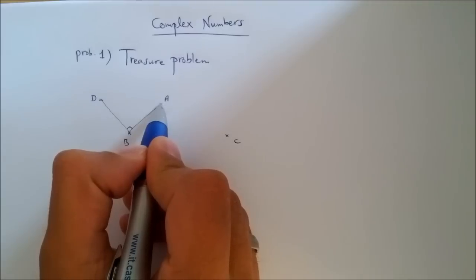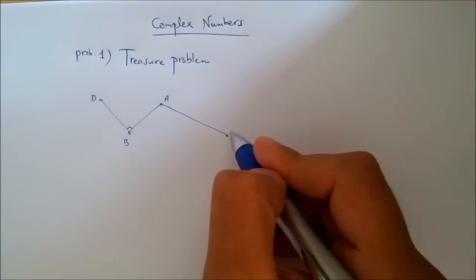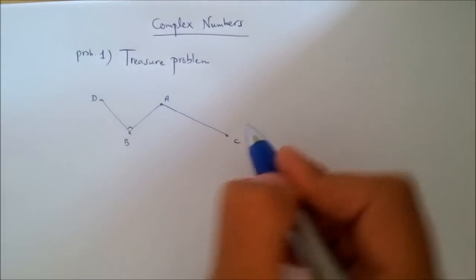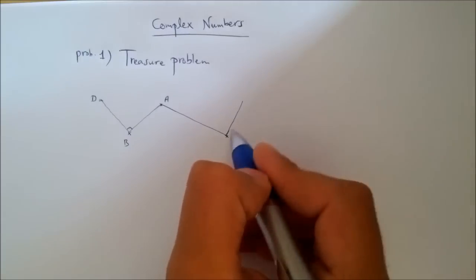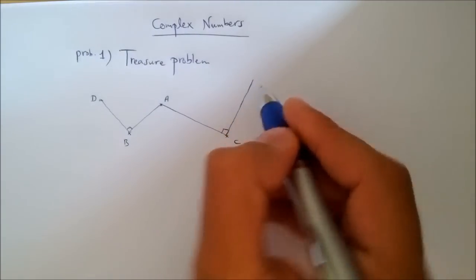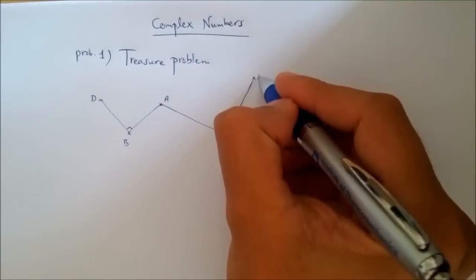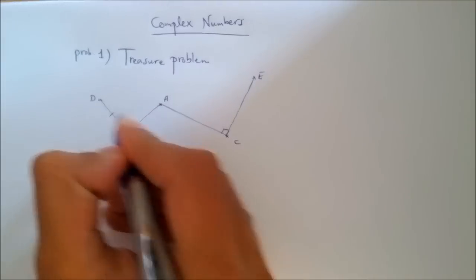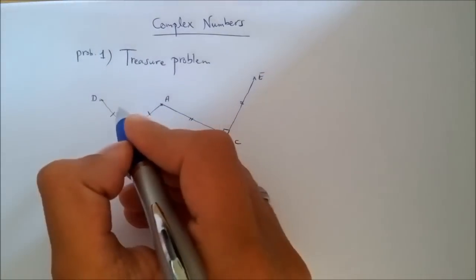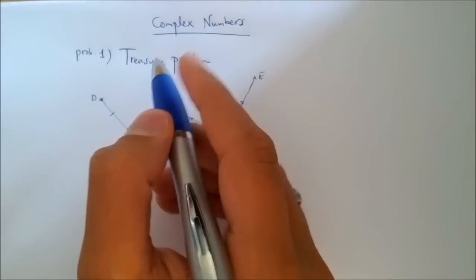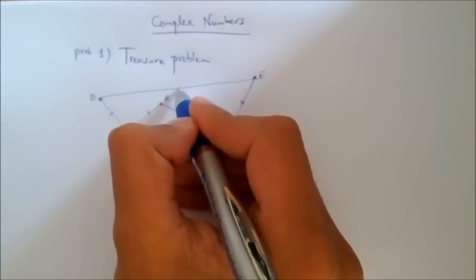We do the same thing starting from A walking to C, make a right angle from AC, but we turn left this time and continue at the same distance AC, arriving at a point E. The distance AD equals AB and CE equals AC. The treasure position is the midpoint of the line segment DE.